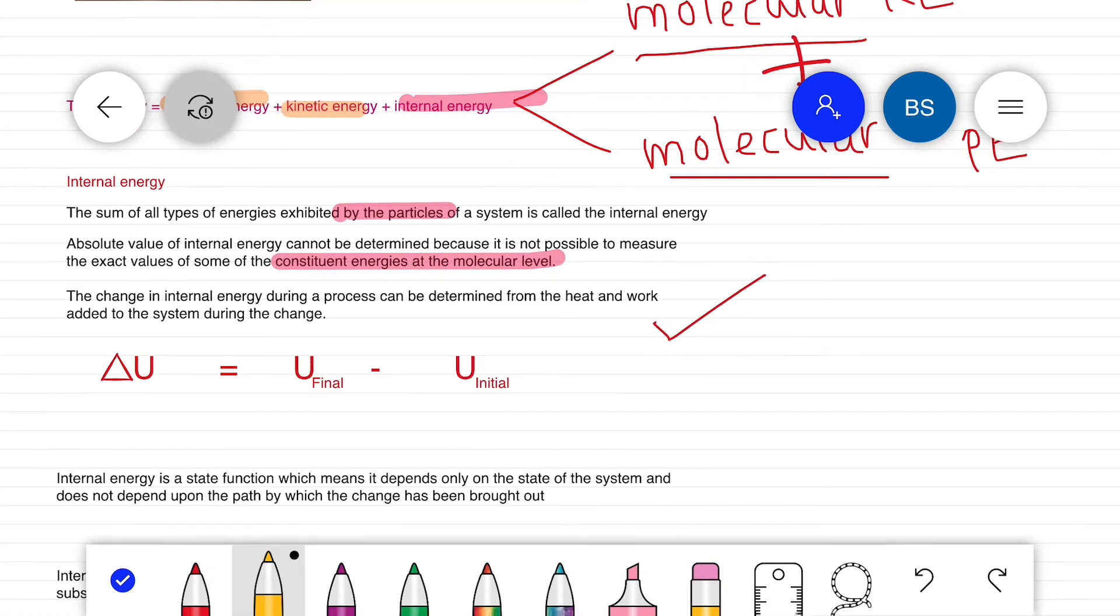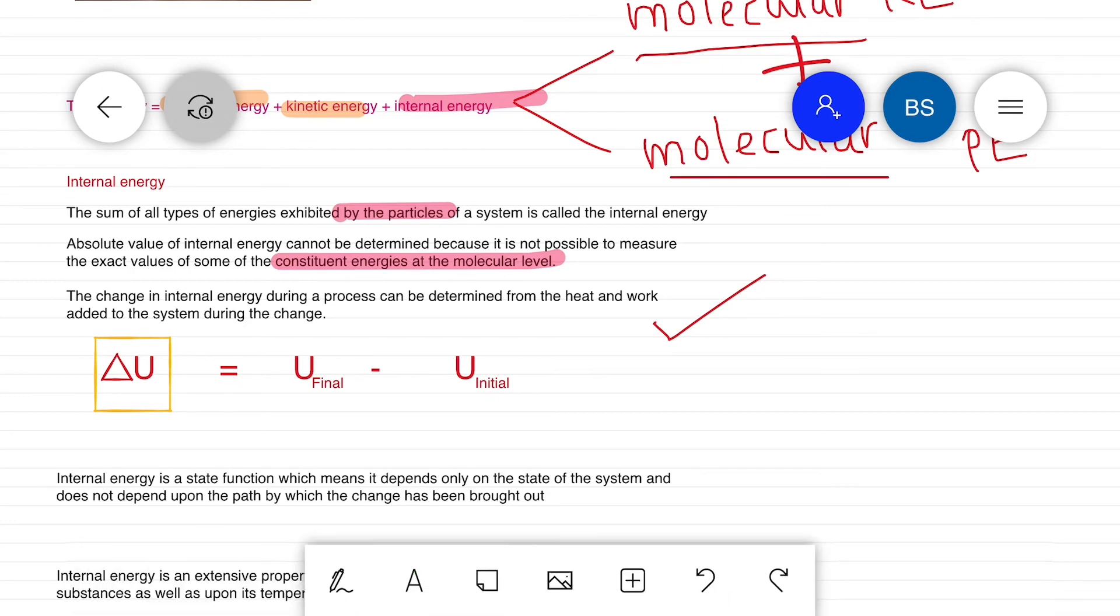By determining the heat and work added to the system, for any process the change in internal energy represented by delta U is given by U final minus U initial.